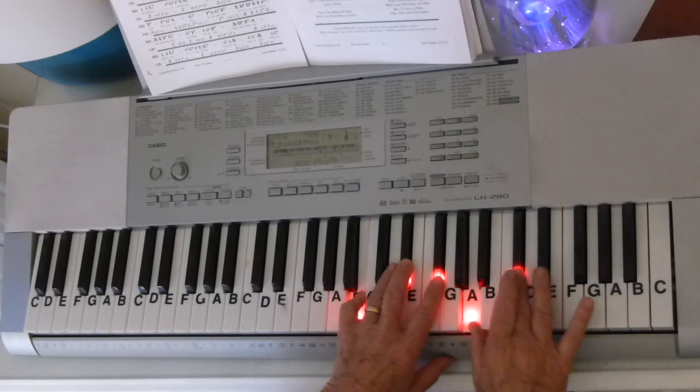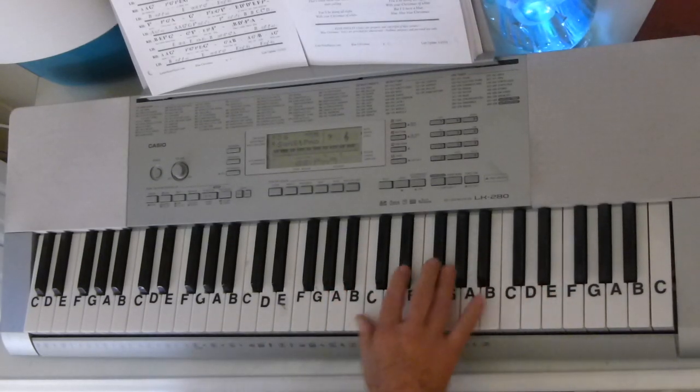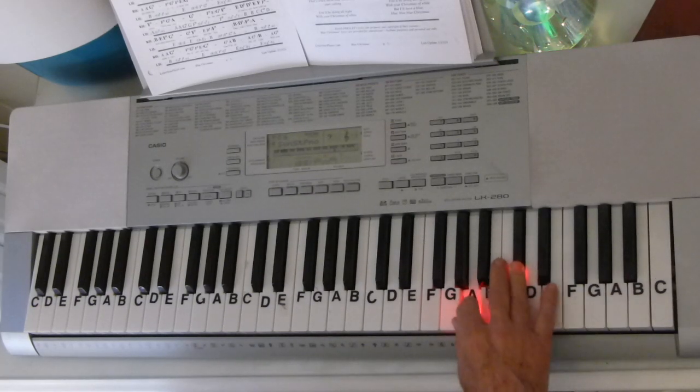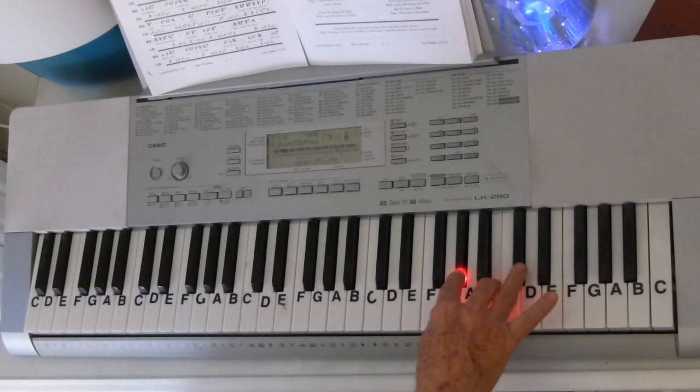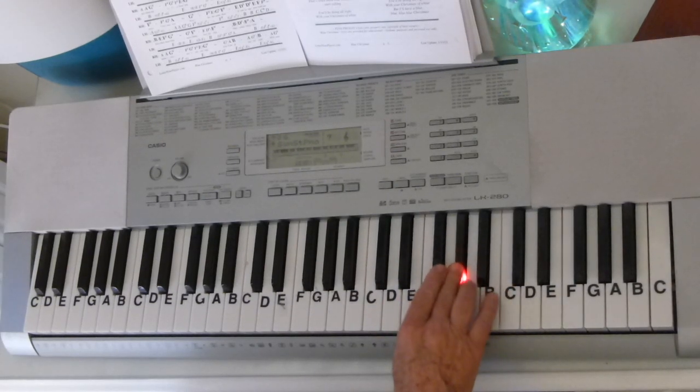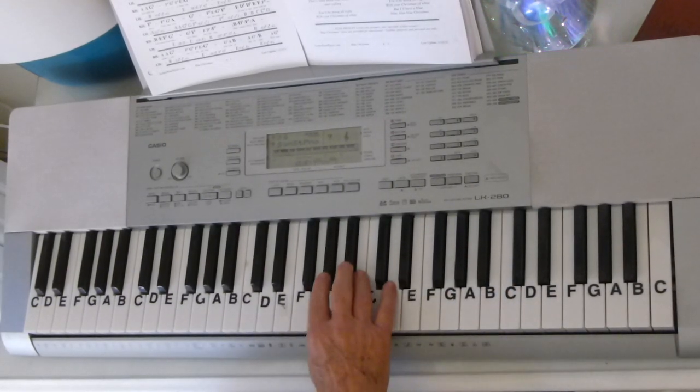So we're adding that extra C# in there. So B, D#, F#, A and C#. G# and B. And then he comes back in with the melody.